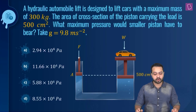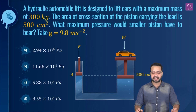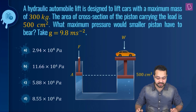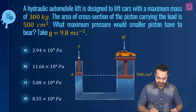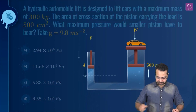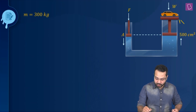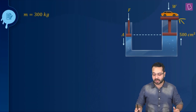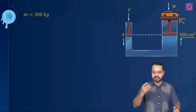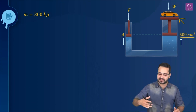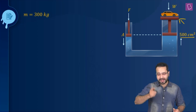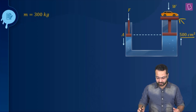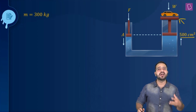The question is: a hydraulic automobile lift is designed to lift cars with a maximum mass of 300 kg. The area of cross-section of the piston carrying the load is 500 cm². What maximum pressure would the smaller piston have to bear? Pascal's law tells me that in a confined liquid, the pressure is transmitted undiminished.